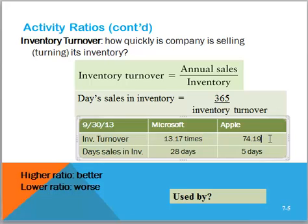Apple, on the other hand, has a turnover of 74 times per year, which means they only have 5 days sales in inventory. Apple has been very efficient in having the manufacturers and dealers hold the inventory, so they have very little invested in inventory at any time. The faster, the better — so the higher ratio, the better. This is used by management to manage performance and monitor activity and trouble spots.